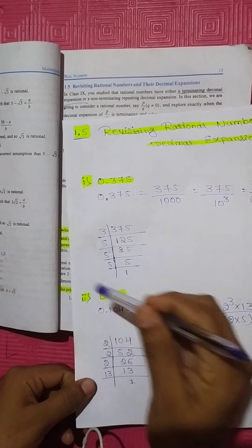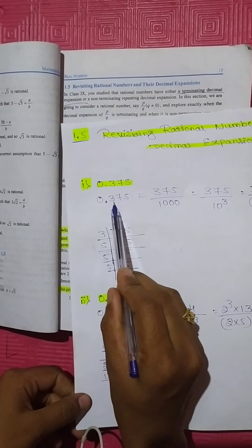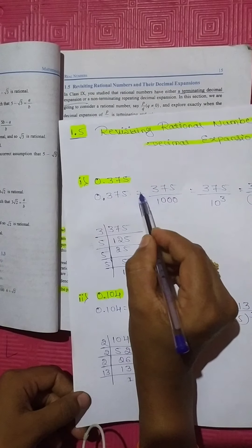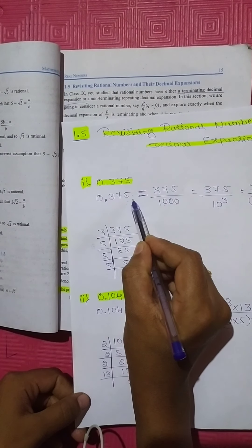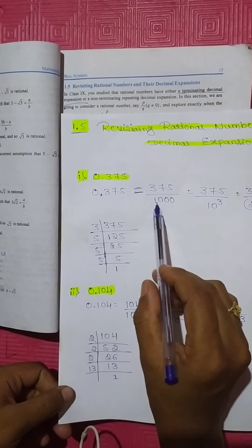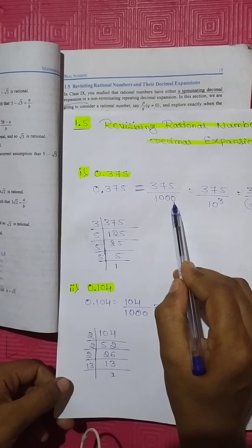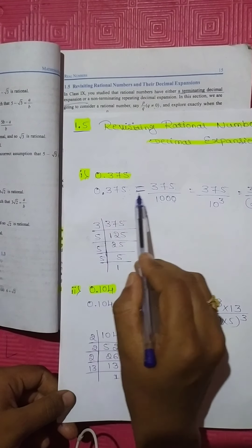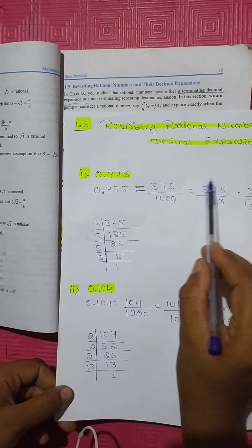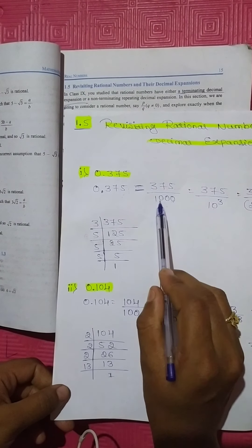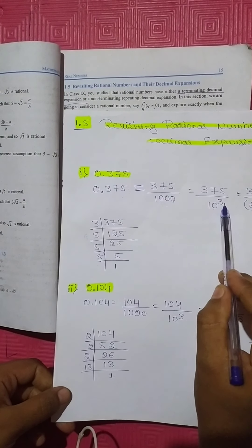First example: 0.375. Since there are 3 numbers after the decimal point, this can be written as 375 divided by 1000. Here 1000 means 3 zeros, which can be written as 10 to the power of 3.